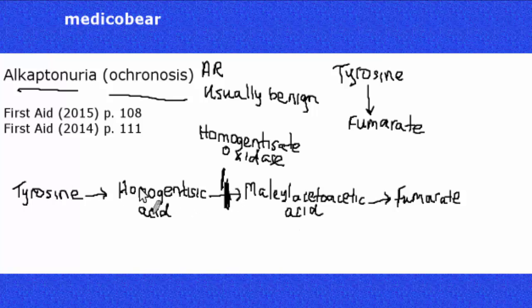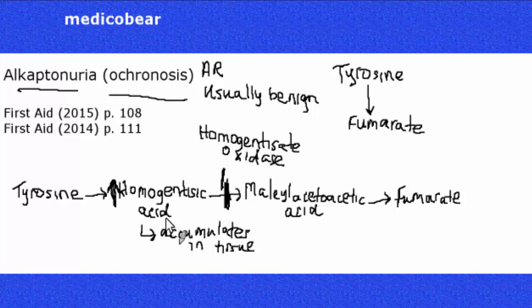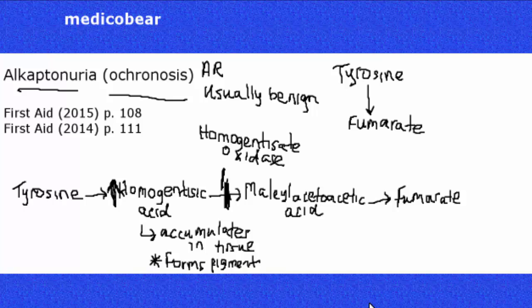Because homogentisic acid can't be converted further, it will build up and increase. As homogentisic acid accumulates in our tissue, it actually has the ability to form pigment, and that explains some of the clinical characteristics that are seen with this disease.